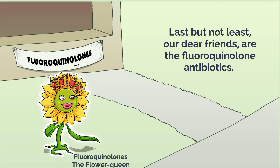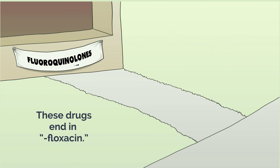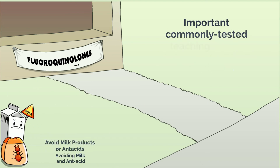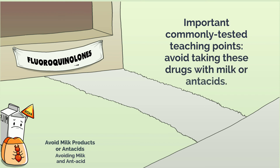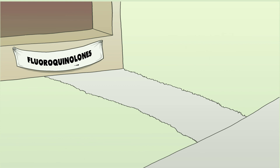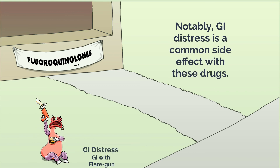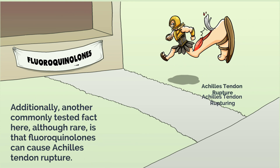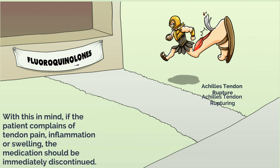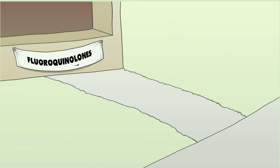The fluoroquinolone antibiotics end in -floxacin. Important commonly tested teaching points: avoid taking these drugs with milk or antacids. GI distress is a common side effect. Additionally, although rare, fluoroquinolones can cause Achilles tendon rupture. With this in mind, if the patient complains of tendon pain, inflammation, or swelling, the medication should be immediately discontinued.